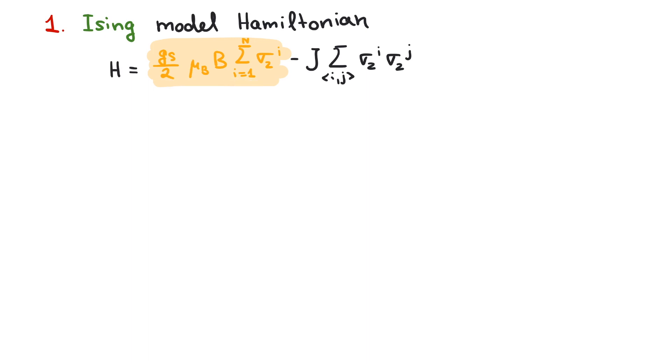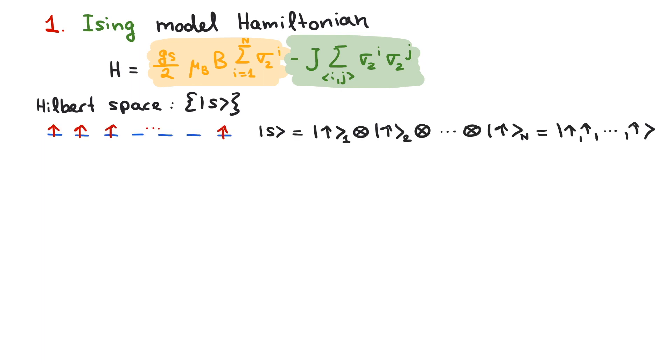The first term describes localized spins that couple to an external magnetic field. This term alone are non-interacting spins, which we have solved in a previous video. The second term contains coupling of neighboring sites. Let's recall the Hilbert space is spanned by states of all possible configurations of spin up and down at each site.